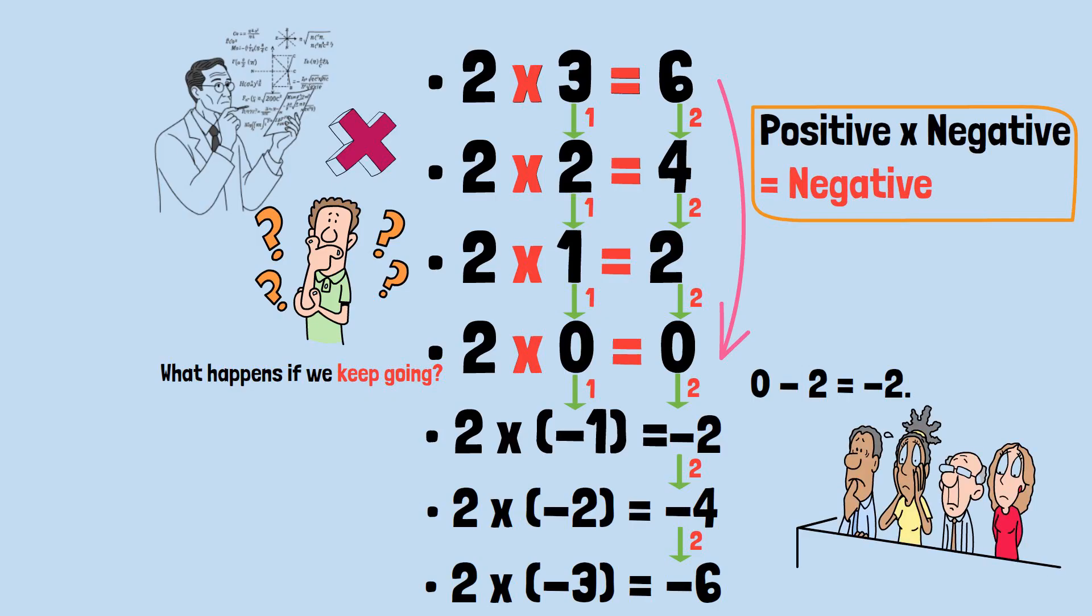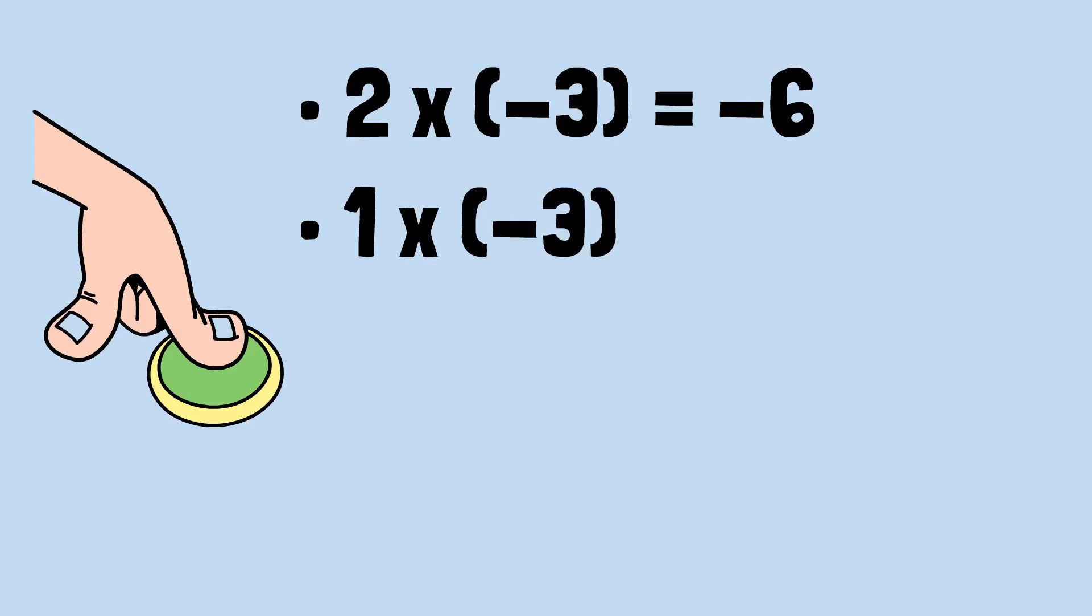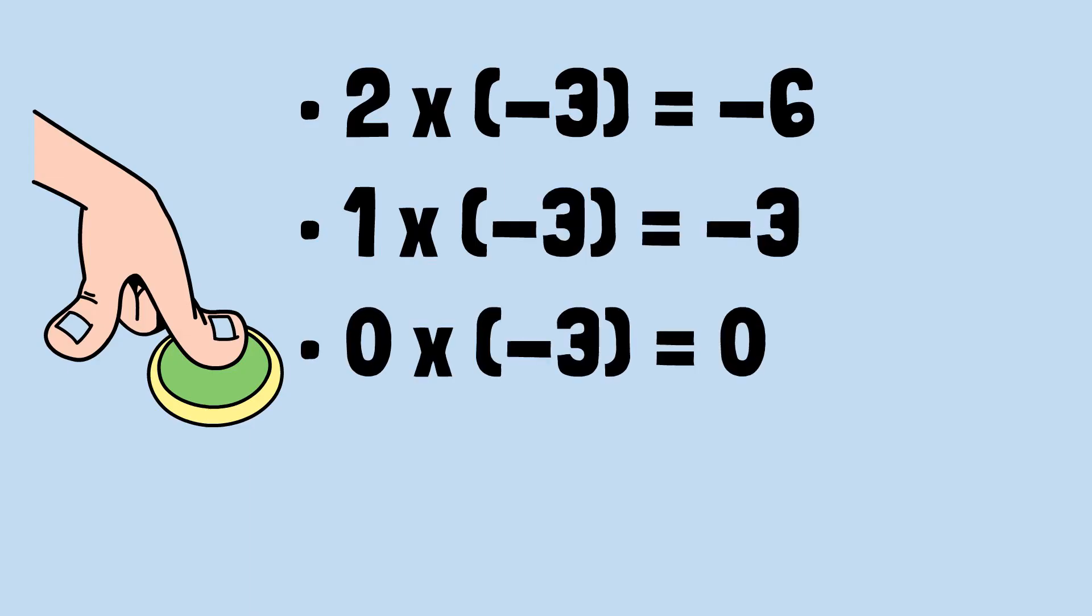But now comes the crucial moment. Let's start a new pattern, this time decreasing the first number instead of the second. 2 × (-3) = -6. 1 × (-3) = -3. 0 × (-3) = 0. Again, there's a clear pattern. Each time we decrease the first number by 1, the product increases by 3. The pattern is crystal clear. So what happens when we continue it?